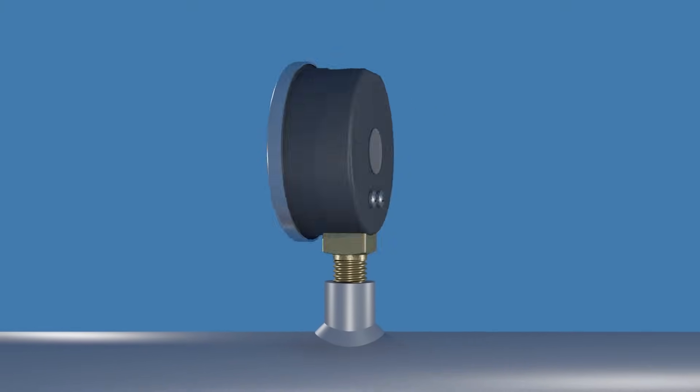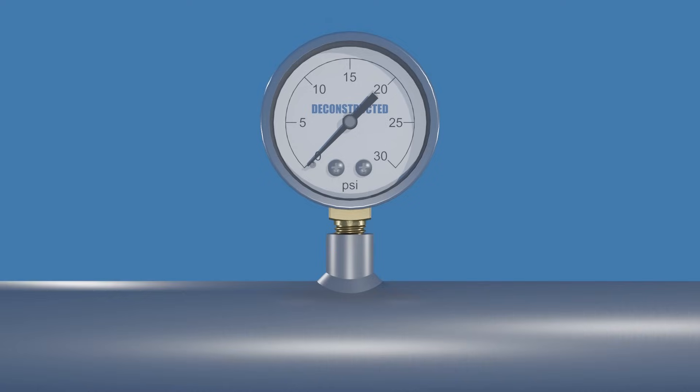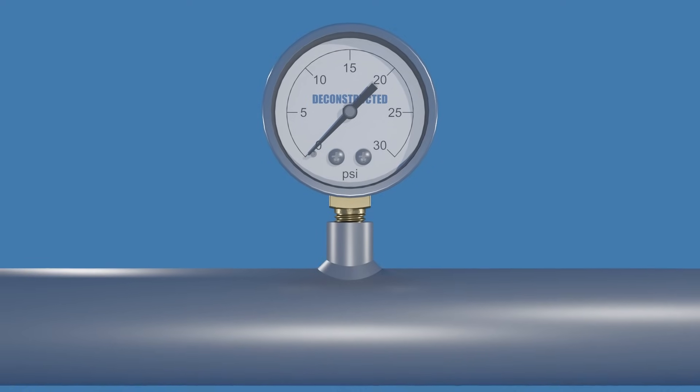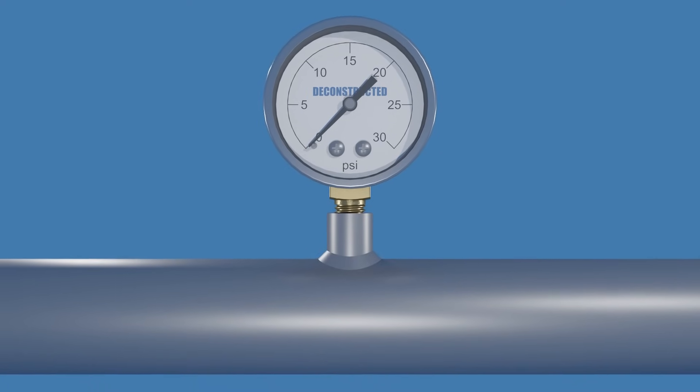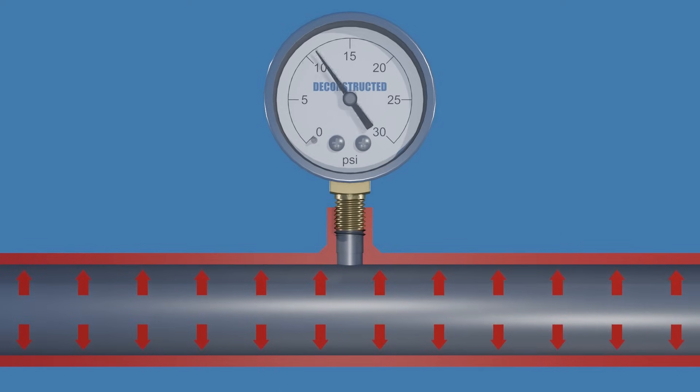This enables precise pressure measurements at specific points within the system. A pressure gauge is a device that measures the pressure of a fluid in a system. The fluid can be a gas or a liquid. Fluid pressure refers to the measurement of the force per unit area exerted by the fluid on a given object.